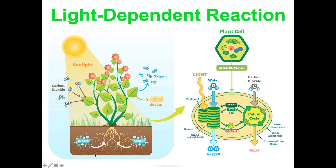I love this picture that simplifies where things are coming in and where they're going out. We're looking at a plant, but this is happening on a cellular level in the cells and those chloroplasts. Light comes into the thylakoid as well as water. It's going to produce oxygen, and it's going to charge up ATP and NADPH that move on to step two.